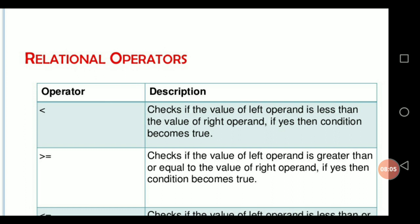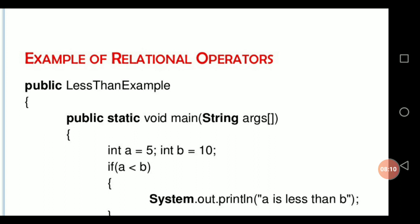This is an example of relational operation in Java. Here we compare A and B. In this example, A contains value 5 and B stores value 10. We check if A is less than B — this condition is true since A is less than B, otherwise A is greater than B.